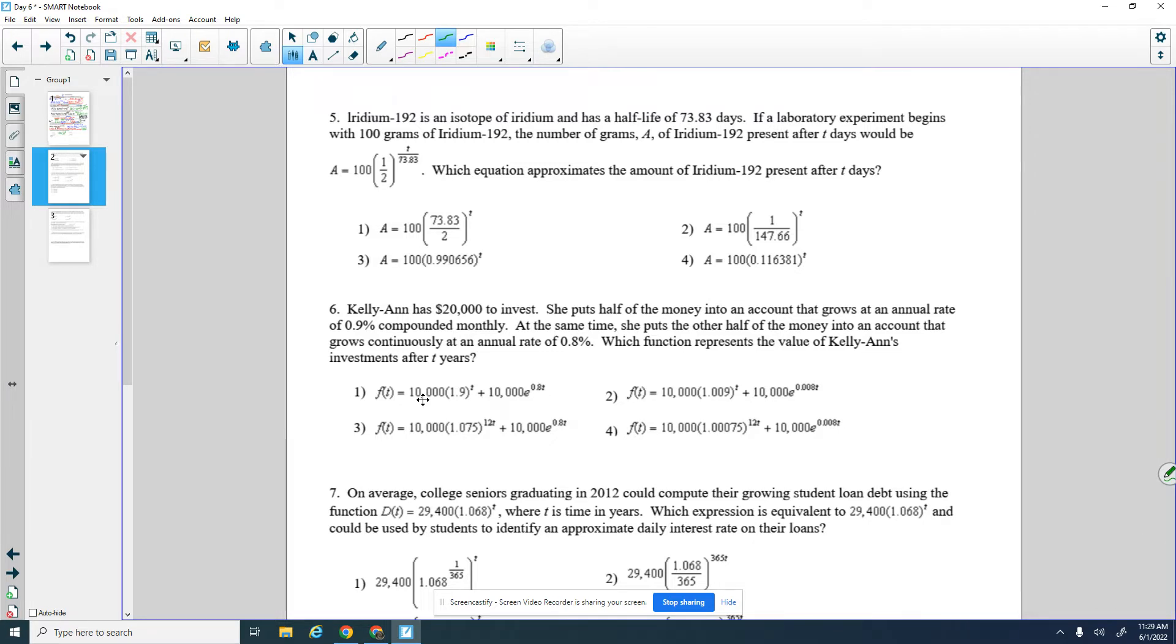This one says iridium-192 is an isotope of iridium and has a half-life of 73.83 days. If a laboratory experiment begins with 100 grams of iridium, the number of grams A of iridium-192 present after T days would be represented by this function. So they've written the half-life function for you already. Which equation approximates the amount of iridium-192 present after T days? So it's tricky. Basically, I'm asking for another equation written in a different way.